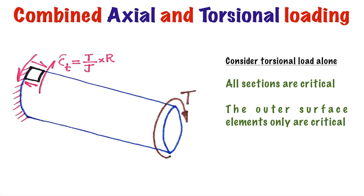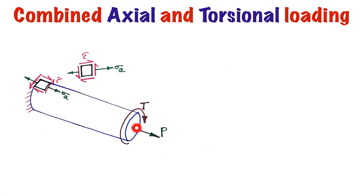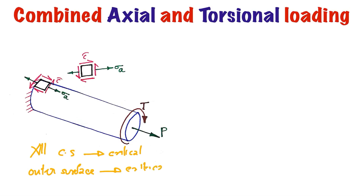Now we combine these two individual effects to get the state of stress for combined loading. For the combined case with axial load and twisting moment, the axial load produces axial normal stress sigma_A, and the torsional moment produces shear stress tau. This element gives the state of stress for the critical element. For this combined loading, since all cross sections are critical and only the outer surface elements are critical, we select the element at the outer surface, and its state of stress is given by sigma_A and tau.